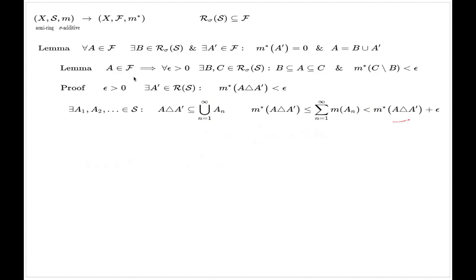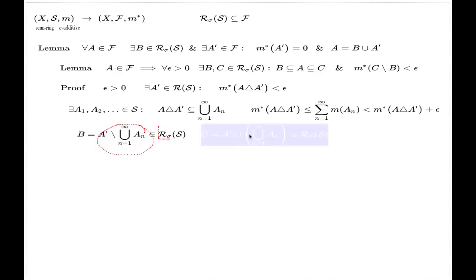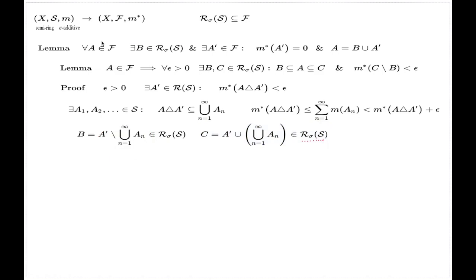Here is the construction for B and C. B will be taken as A' minus the union of all elements of the covering. Because this is a sigma algebra, this element will be in the sigma algebra. C will be A' union the covering. Again, because this is a sigma algebra, this combination will be an element of the sigma algebra.